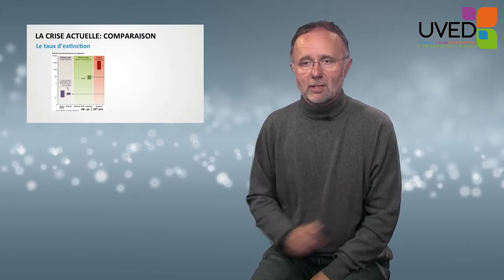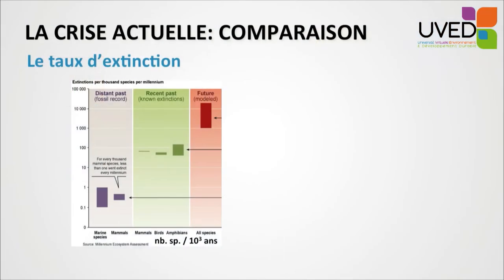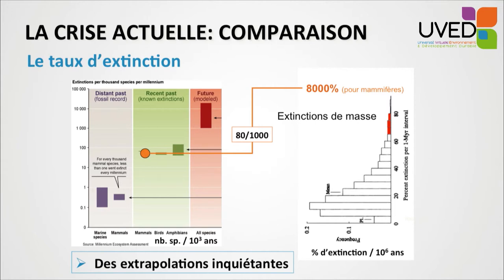Now, if we come to the current crisis and try to compare — this graph shows the extinction rate of some animal groups: marine species, mammals, birds, amphibians, and vertebrates over the last 100 to 150 years. Paleontologists divide the last 500 million years into slices of one million years and look at the percentage of species that became extinct per slice. On average, the extinction rate is about 20%, and for the five major crises, it reaches 80%. If we extrapolate what we know about current fauna extinction, we get 8,000% for mammals.